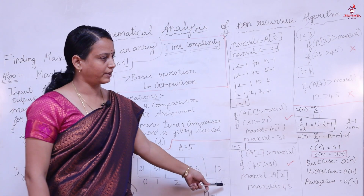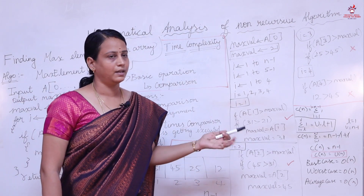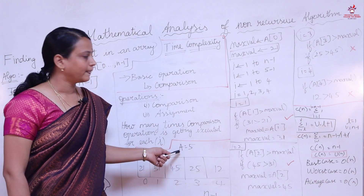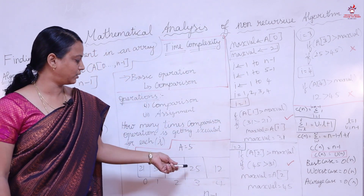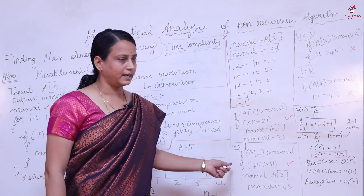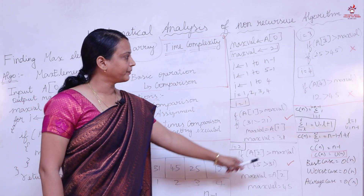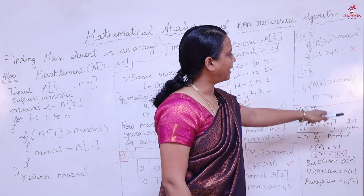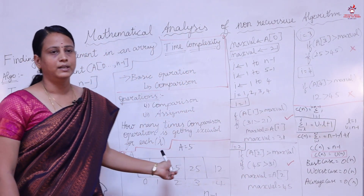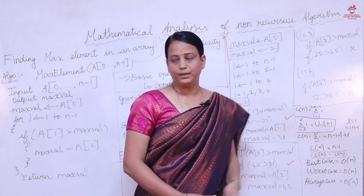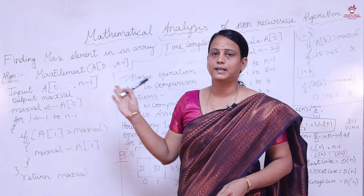We need to complete the entire array because we don't know in which location the maximum value is stored. Whatever the array size — 5, 6, 7, or any number — we must complete all iterations of the for loop. After completing up to i = 4, the maximum value found is 45. We return that maximum value. This is the correct algorithm for finding the maximum value stored in an array.